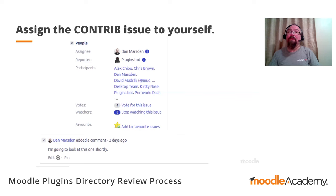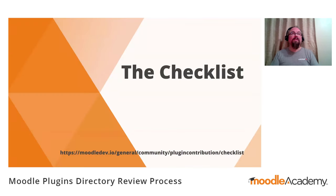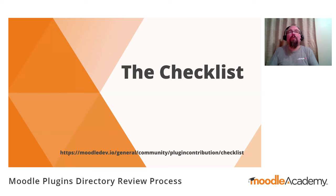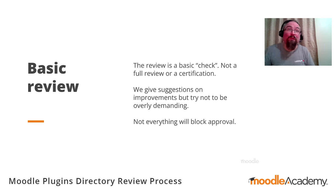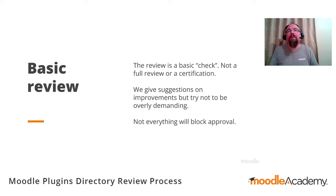There's also a canned response for plugin reviews in the Moodle tracker. When you go to add a comment, you can click on the canned response option and it gives you a template that allows a reviewer to run through the different items and give feedback on how the plugin complies with the checklist. The checklist is available on Moodle dev docs — search for plugin contribution checklist at moodle.dev.io. The review performed is a basic check and should not be considered a full security review or a certification. The review team doesn't always look at every single line of code, and the community should perform their own risk assessment prior to installing a plugin.